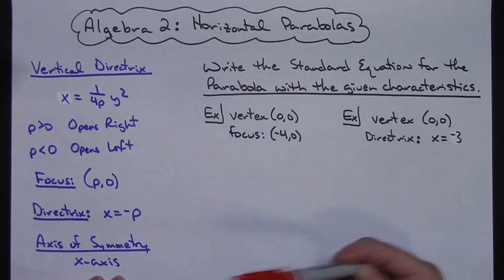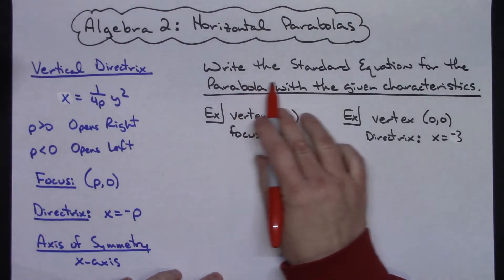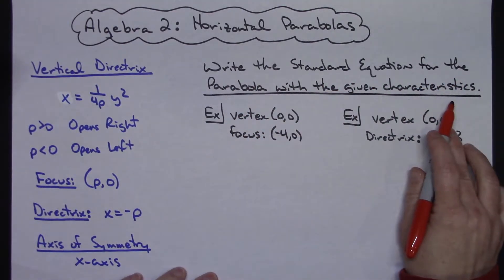And that is assuming here that we've got the general parabola that has not moved away from the origin. So we're going to write the standard equation for the parabola with the given characteristics.